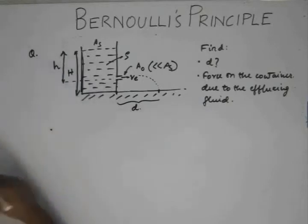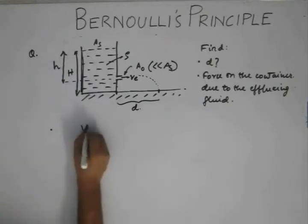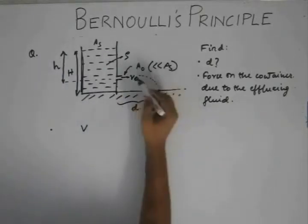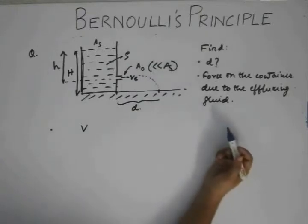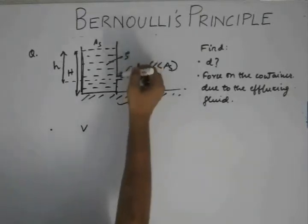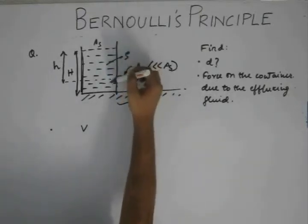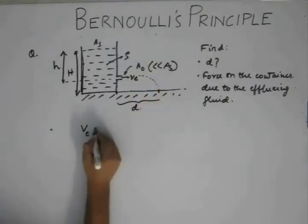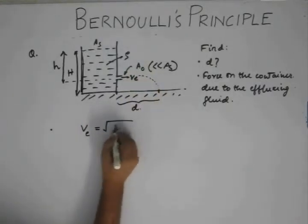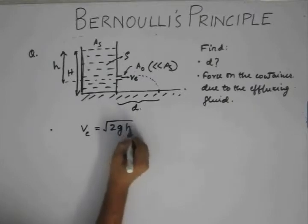So from our previous discussions, what we found that if this holds, Torricelli's laws are valid, and thus the fluid falls freely through this height of small h. So velocity of efflux is going to be root 2G small h.